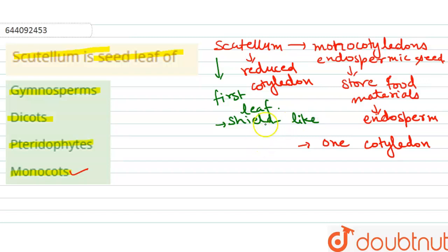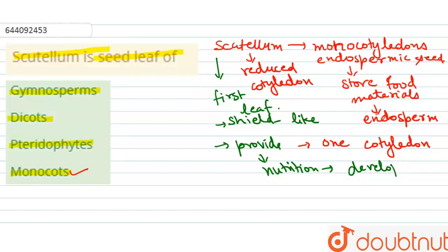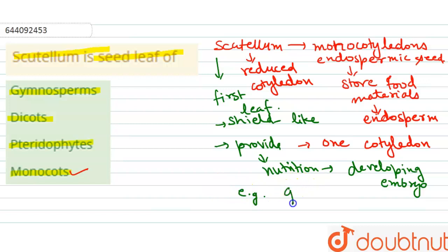The function of the scutellum is to provide nutrition to the developing embryo. In monocotyledons, the embryo has only one cotyledon — for example, grasses. The scutellum is present towards the lateral side of the embryonal axis.